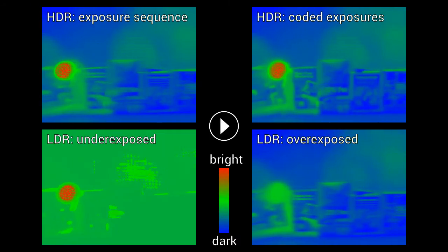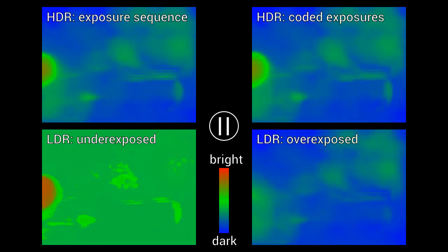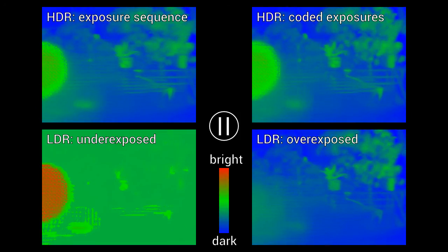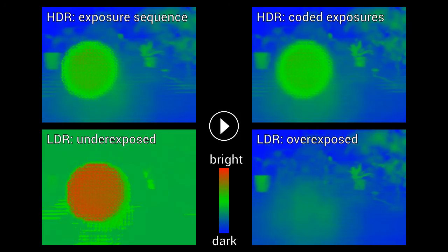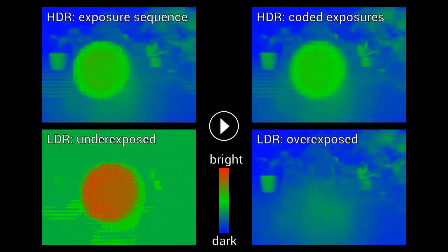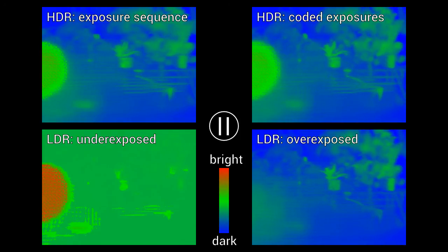The heat maps visualize the captured dynamic range of approximately 13,400 to 1 for the high dynamic range light fields and 450 to 1 and 80 to 1 for the underexposed and overexposed low dynamic range recordings.